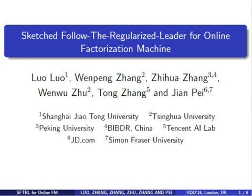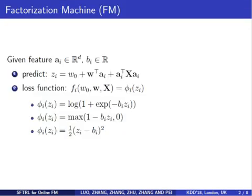In this paper, we propose Sketched FTRL Organizer Leader to solve online factorization machine efficiently. Consider the problem of factorization machine. Compared with a linear model, FM captures the extra pairwise feature interaction by matrix X. The model can be applied to many classical loss functions such as logistic loss, hinge loss, or least square loss.